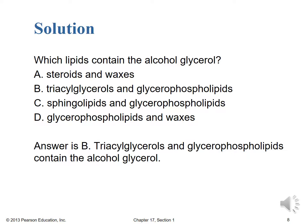Hopefully B jumped out at you — triacylglycerols and glycerophospholipids both have 'glycero' in there, so if only every question could be that easy! The steroids are based on those four fused rings, and waxes and sphingolipids don't involve glycerol, although they do involve fatty acids. So it's answer choice B: triacylglycerols and glycerophospholipids contain the alcohol glycerol, with the glycerol having three carbon positions each with a hydroxyl group. We'll talk more about all of these substances in later lectures. Hopefully you've enjoyed your introduction to chapter 17 and are looking forward to further discussions. Thank you very much.